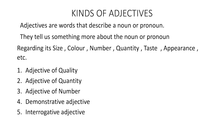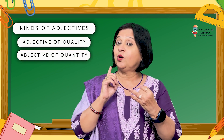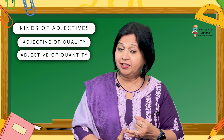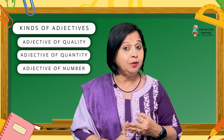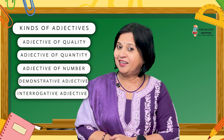It gives us a little more information about the size, the shape, the appearance, the feel, the touch, the number, the order, and many other features of a noun or a pronoun. The different kinds of adjectives that we shall be covering are: adjectives of quality, adjectives of quantity, adjectives of number, demonstrative adjectives, and interrogative adjectives.